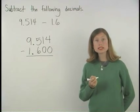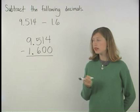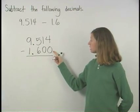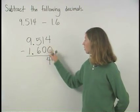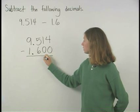Next, we subtract in each column starting on the right. So we have 4 minus 0 which is 4, 1 minus 0 which is 1.